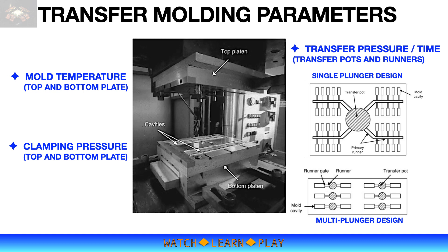Mold clamping pressure, transfer pressure, and transfer time are the other critical mold parameters. Clamping pressure ensures the flow of material to fill all cavities and that the mold is fully closed during polymerization. Transfer pressure is applied by the plunger and pushes the mold compound through the runners and gates to the cavities. Transfer pressure controls the transfer time — higher pressure increases material flow, thus shortening transfer time. In high-volume manufacturing, shorter cycle time means higher throughput, so shorter transfer time is preferable. However, higher transfer pressure is not always desirable, as the mold material pushes through the wires and higher transfer pressure may lead to wire sweep and cause wire shorts within the package.